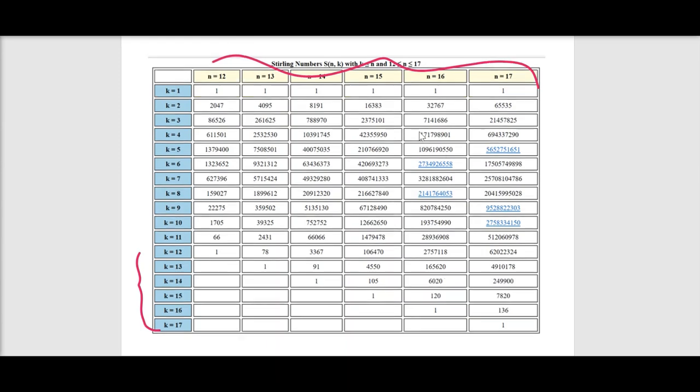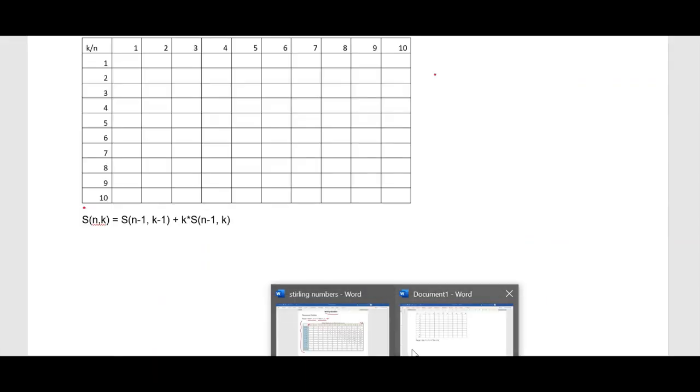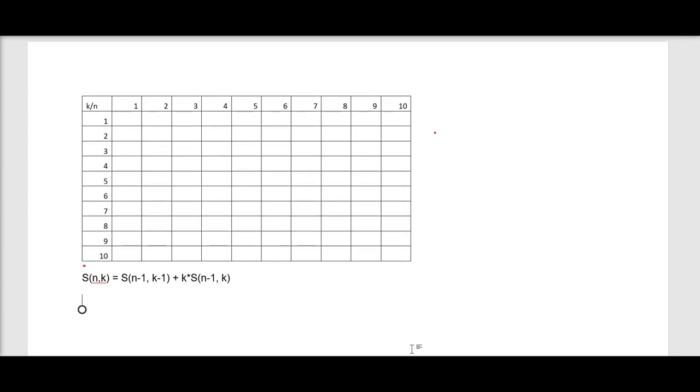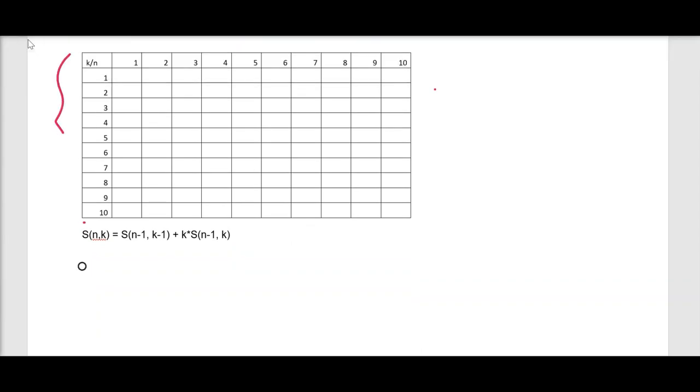Let me now show you how to calculate and create this table using the calculation procedure which is given. I have taken a 10 by 10 matrix. You can see the value of k is 10 and the value of n is also 10. This is the value of n and this is the value of k.